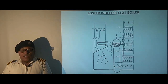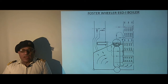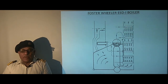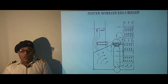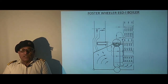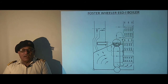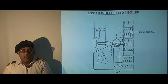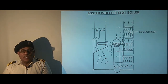This sketch shows an ESD-1 boiler in which the superheater is placed after the main generating bank so that it is subjected to lower gas temperature, which reduces the slagging, flame impingement and corrosion of the superheater support. Let's see the main components of the boiler and the flow of air, flue gas and steam.